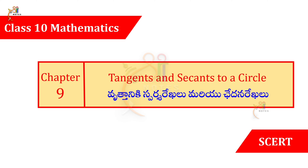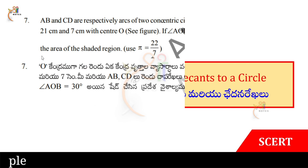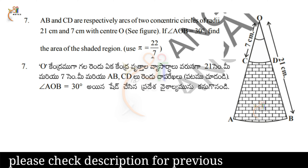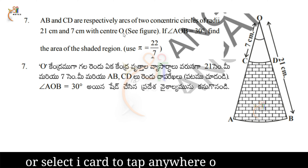Question number 7: AB and CD are respectively arcs of two concentric circles of radius 21 centimeters and 7 centimeters with center O. If angle AOB is equal to 30 degrees, find the area of the shaded region.